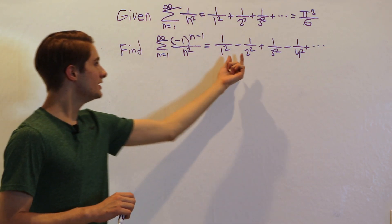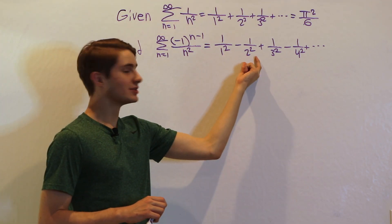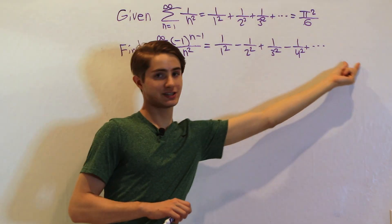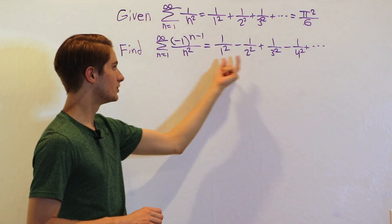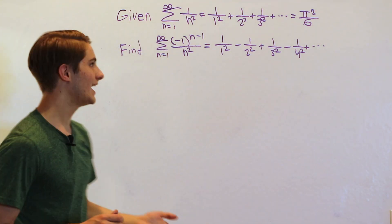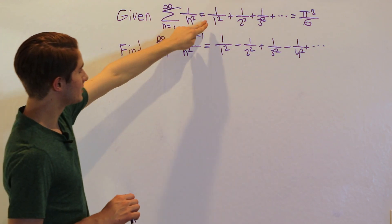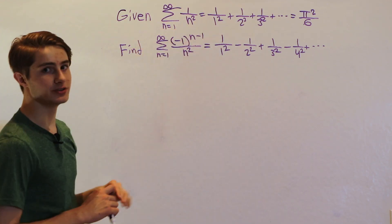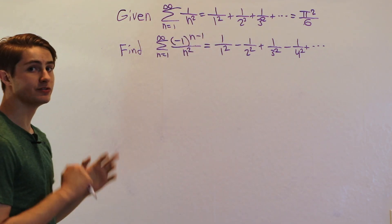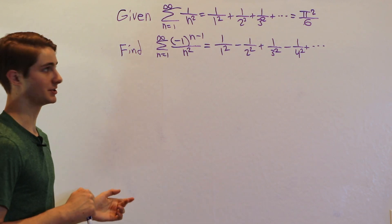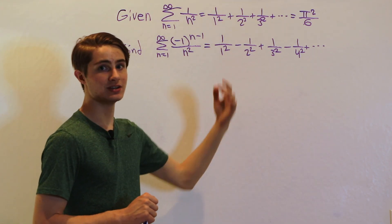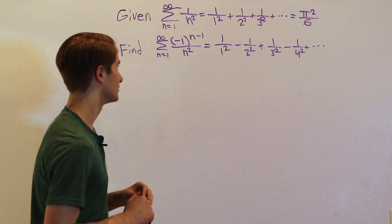The even terms — 2, 4, 6, 8 — are being subtracted, and the odd terms — 1, 3, 5 — are being added. So maybe we can take the original series, split it up into the even and odd terms, and figure out what they each equal separately. Then we can just take the odds minus the evens to get our answer.